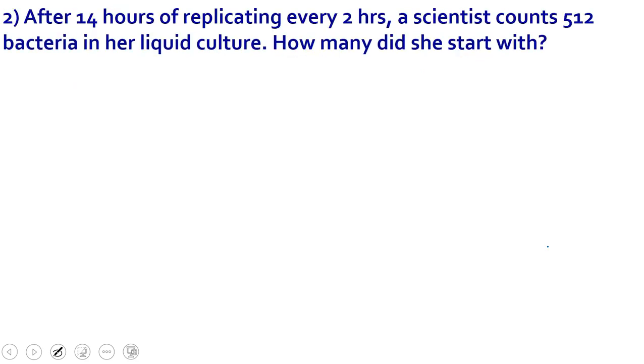So this is our next practice problem. After 14 hours of replicating every two hours, a scientist counts 512 bacteria in her liquid culture. How many did she start with? So take a minute, practice that in your notes, come back, and we'll do it together. So what we know from this problem, our time is 14 hours. They replicate every two hours, so that's big G. And since she's finishing after 14 hours is when she counts 512 bacteria, we know that's our N sub t. So N sub t equals 512 bacteria.